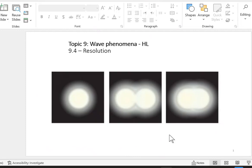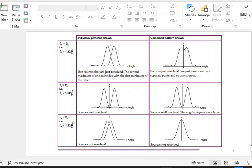So, well resolved, here I cannot distinguish that there are two. Here there will resolved, well resolved, it means I can distinguish that I have two source of light. Here it's just resolved. Now, what is the difference between them?